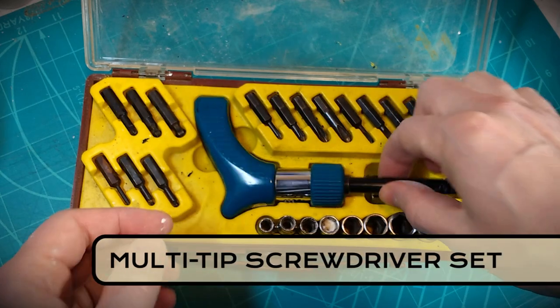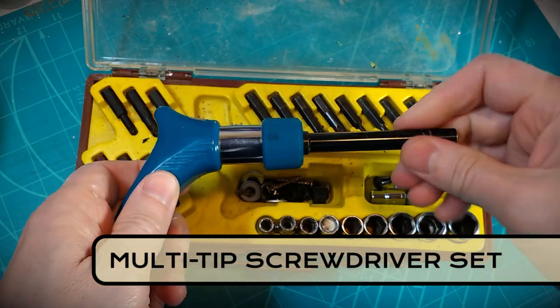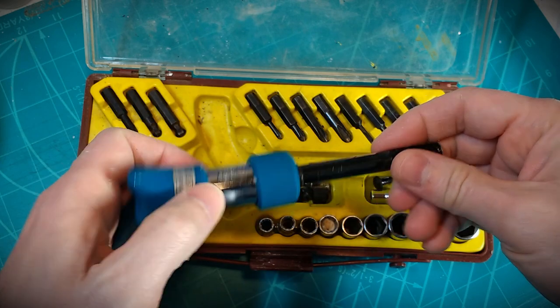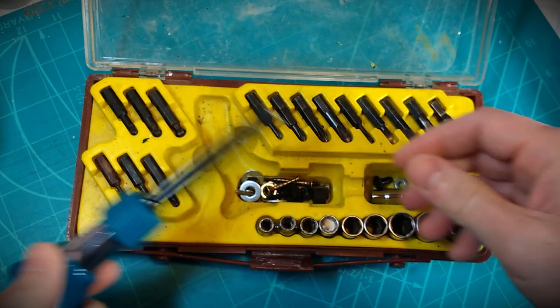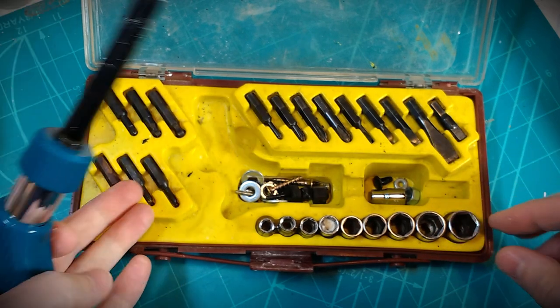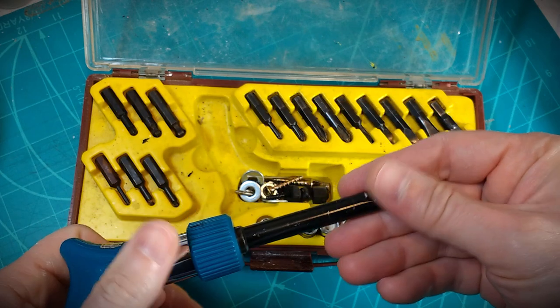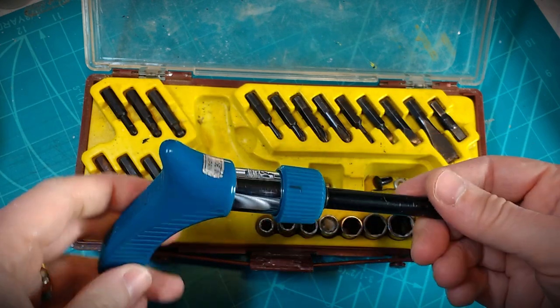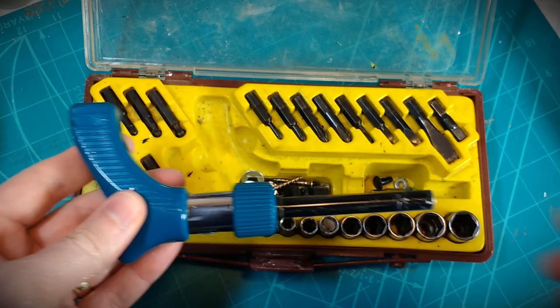A multi-tip screwdriver set, this one I've had for years and years. It's a ratcheting one, and it's also magnetic, which is great because as you're unscrewing some of these things they don't just fall out and get lost. It'll grab onto the tip, so it's good to be able to keep track of the screws that way.